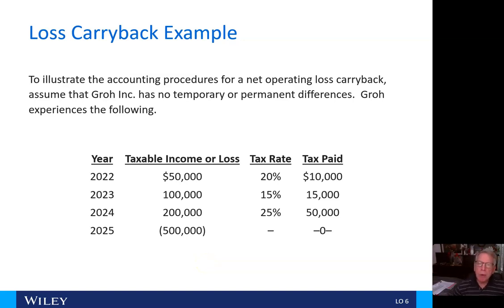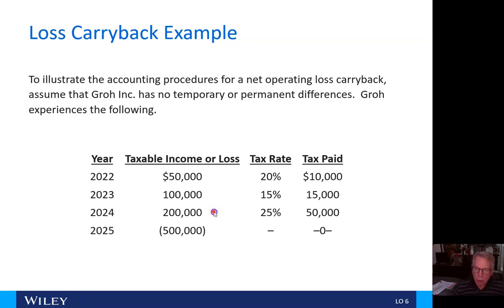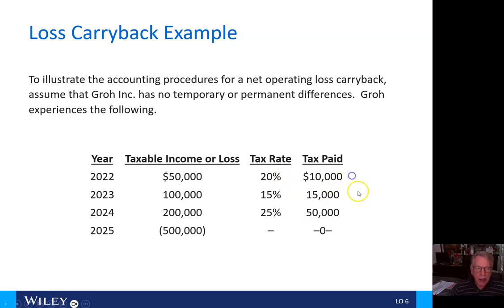To illustrate the accounting procedures for net operating loss carryback, assume that Grow Incorporated has no temporary or permanent differences. Grow experiences the following: in 2022, they had $50,000 income; 2023, $100,000 income; 2024, $200,000 income. But in 2025, they had a very bad year and lost half a million dollars. Differing tax rates apply to those years, and the taxes paid are shown as follows.